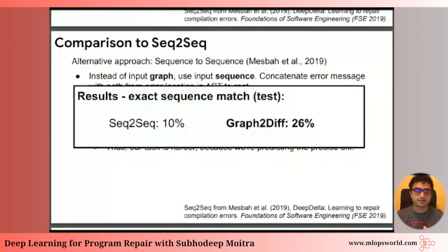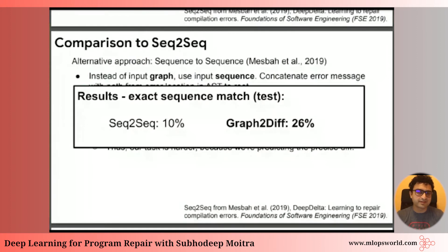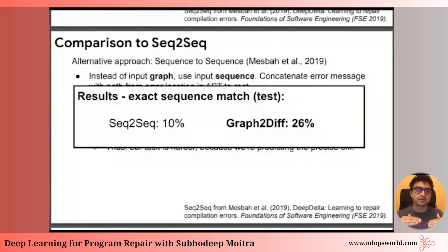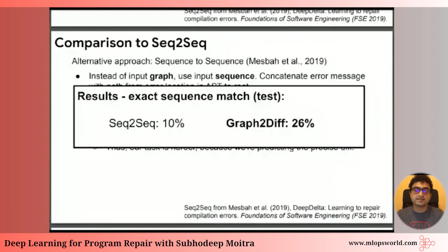In terms of test accuracy — did we exactly get the fix that the developer made — the sequence-to-sequence approach gets 10% while the Graph2Diff approach gets around 26%. Some might wonder if 26% looks low. The task is much more challenging and the metric is much harder. Fixing computer programs is hard, and we're not satisfied with a fix that kind of looks right — we have to exactly get the right thing, otherwise it doesn't build. The analogy would be translating between English and French: it's okay to have an approximate translation, but in a compiled language it has to be exactly right.